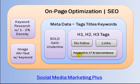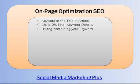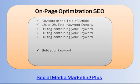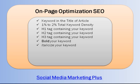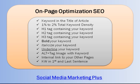Make sure your keyword appears in the first and last sentence of your blog post article. To recap the moving parts: keyword in the title, one to two percent keyword density, keyword in H1, H2, and H3 tags, keyword bolded, italicized, and underlined, an image with an alt text tag containing your keyword, internal links to other pages on your site, and your keyword in the first and last sentence.